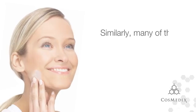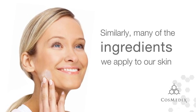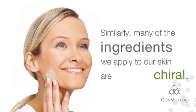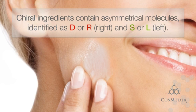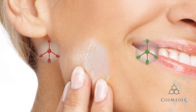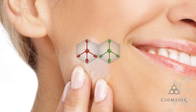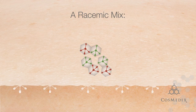Similarly, many of the ingredients we apply to our skin are chiral. Chiral ingredients contain asymmetrical molecules identified as D or R in the right form, and S or L in the left form. Many ingredients contain both forms in an achiral, or racemic, mix.